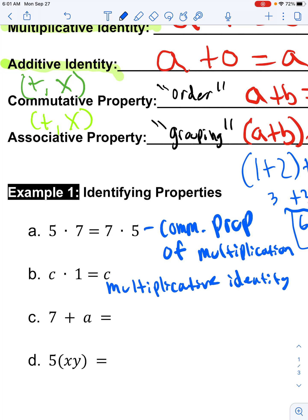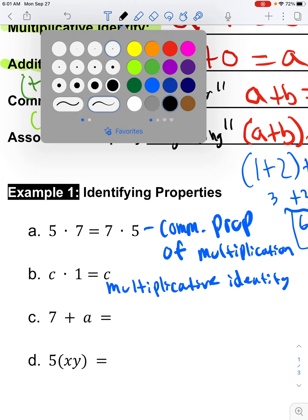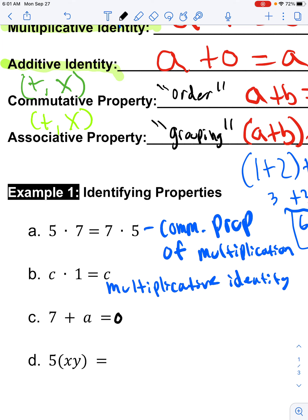We got to fill this one in. Seven plus a is the same thing as a plus seven. If I change the order of my addition, I would say that this is the commutative property, not of multiplication this time, of addition.